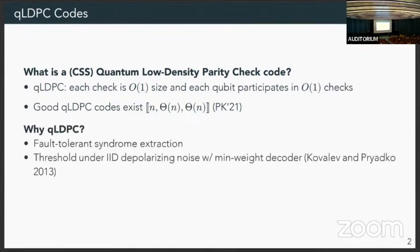So we care about the QLDPC property for a few reasons. The first one is that we automatically have fault-tolerant syndrome extraction. The way you can think about it is that if we have an error in our syndrome extraction circuit, this can only propagate to a constant size region. And furthermore, each qubit itself is only participating in a constant number of gates, so there's not too many errors that are accumulating. And then furthermore, the QLDPC property gives us automatically a threshold under depolarizing noise. This is work by Kovalev and Priyad­ko, and then later used by Gottesman.